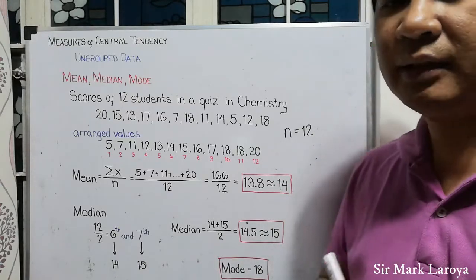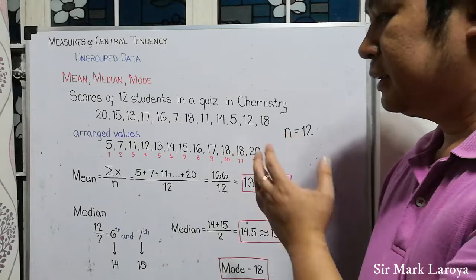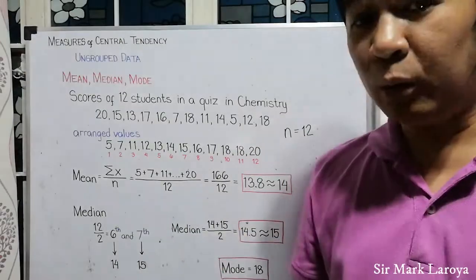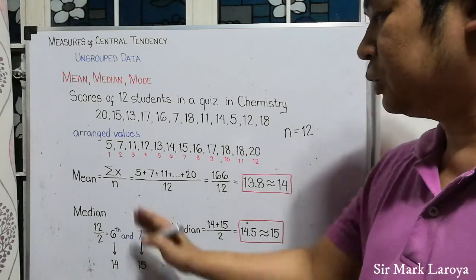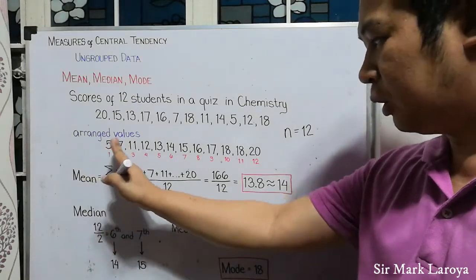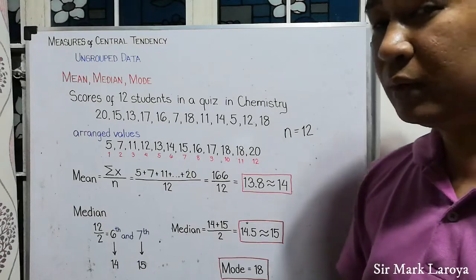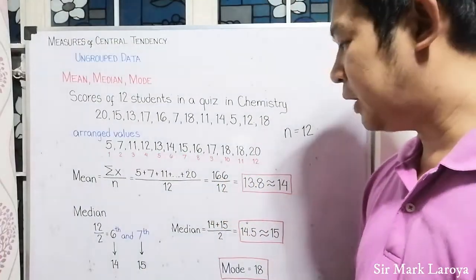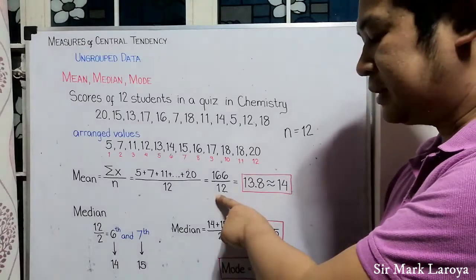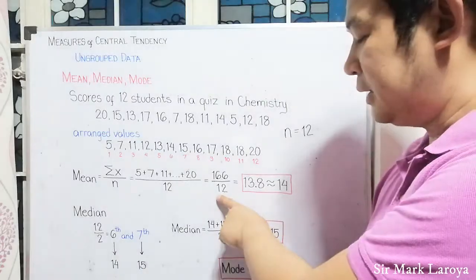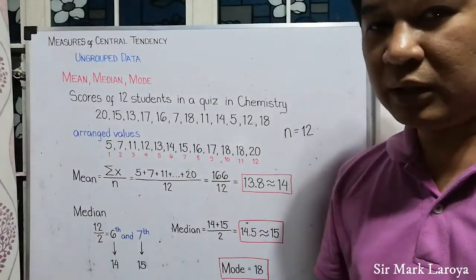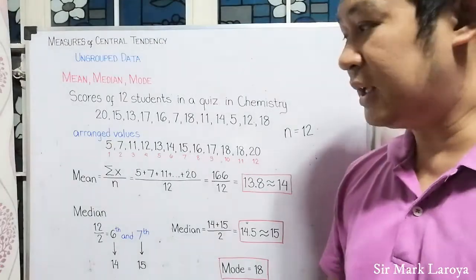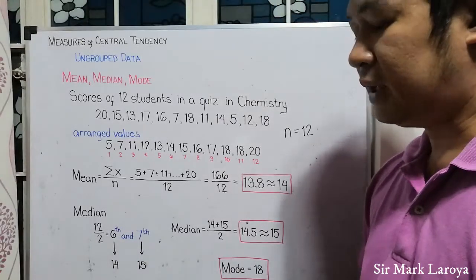So, let us now get the mean of our dataset. For the mean, we simply add all of the values. In getting the sum, we add all of these values and then we will get 166 as the sum. Then, divide it by our sample size, which is 12. And then, the answer will be 13.8 or that is nearly equal to 14. So, this is the mean of our dataset.